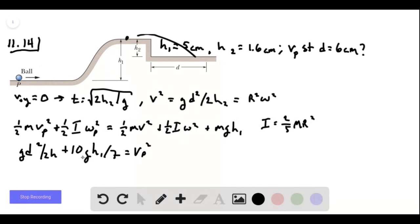And so plugging our numbers in here and taking the square root, we see that our initial center of mass speed of the ball has to be 1.34 meters per second.